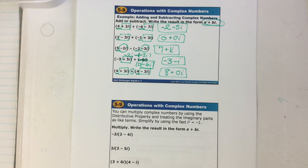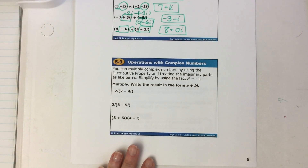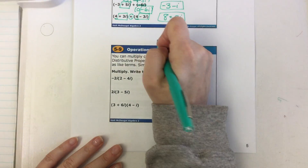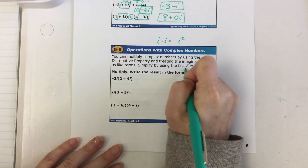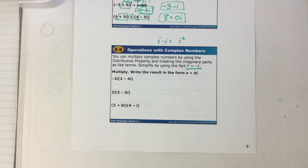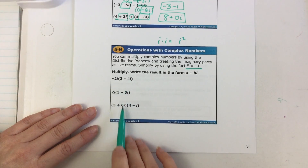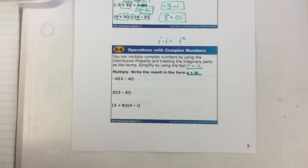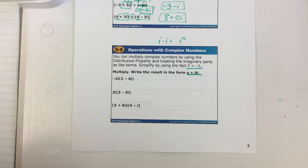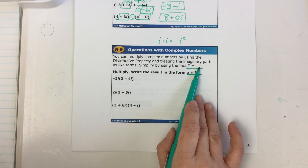You can also multiply complex numbers, but here's the wild thing: if you take i times i, you get i squared, and i squared has a real value of negative one. So if you have an imaginary number and multiply it by another imaginary number, it creates a real number — this is why math is so cool! Anytime you end up with an i squared, you change it to the real number negative one. They want their final answer as a complex number A + Bi.